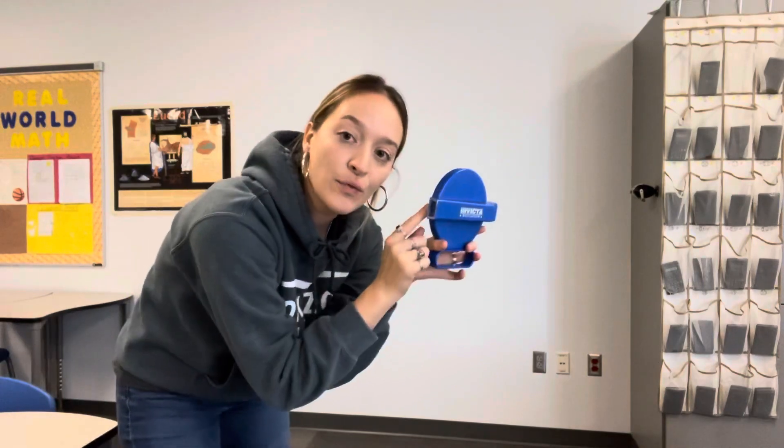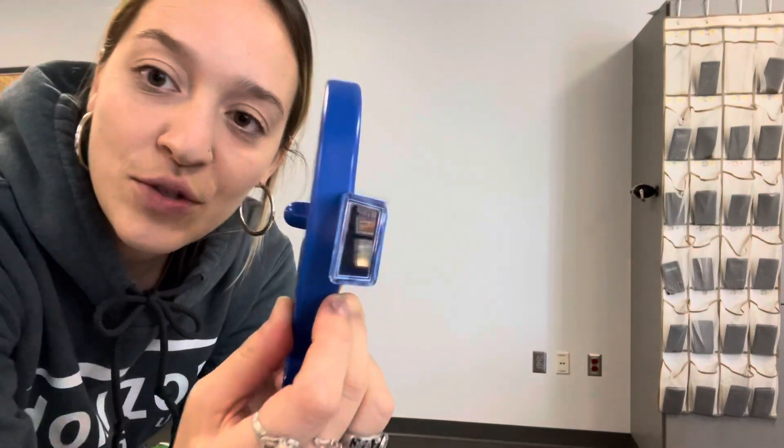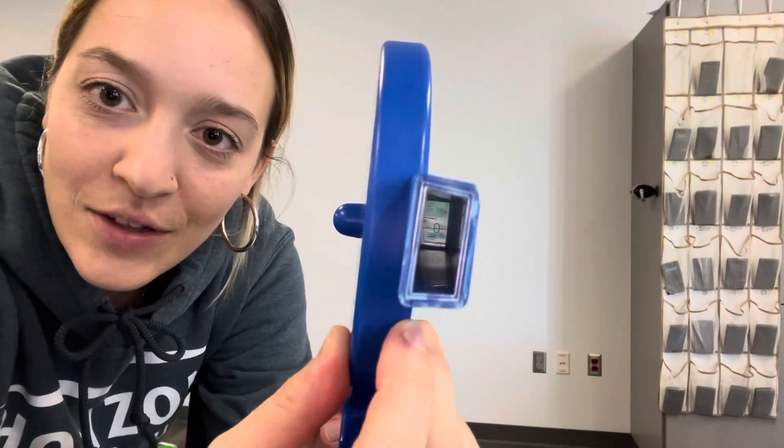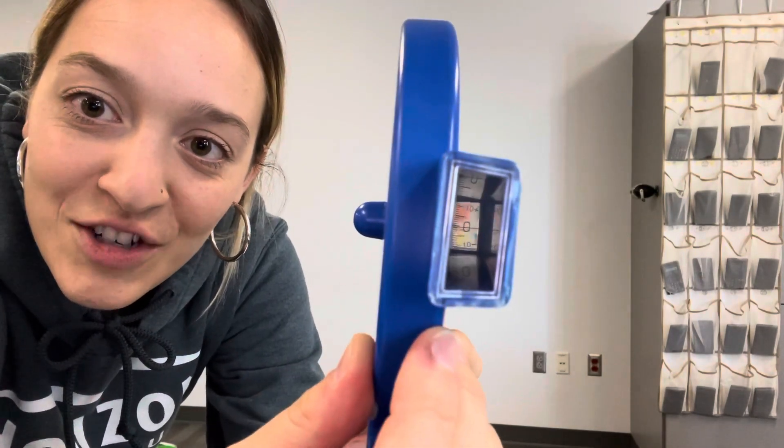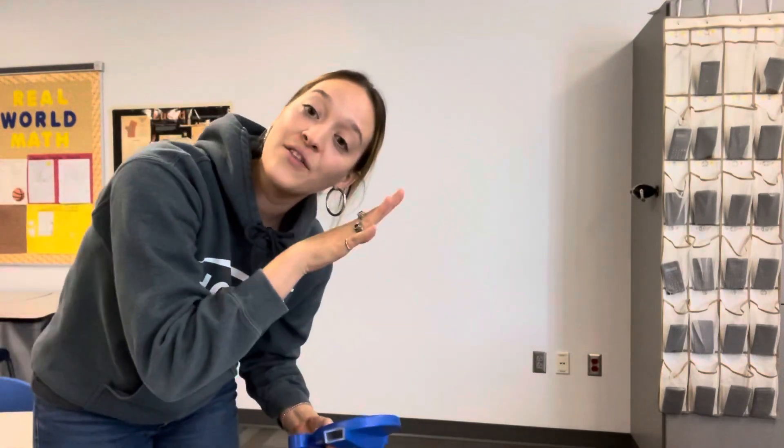You're going to look through—there's a small opening right here. As you look through, you can kind of see, look how cool this is. You can see that there are numbers in there that's going to give you your angle of elevation.